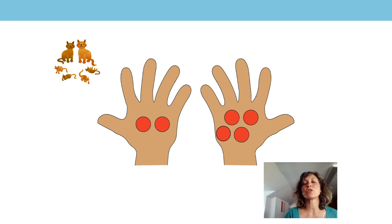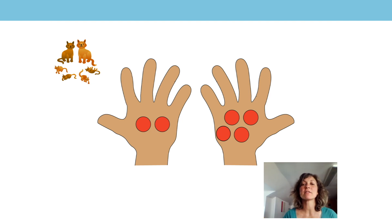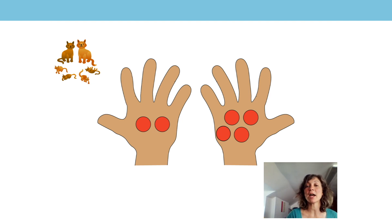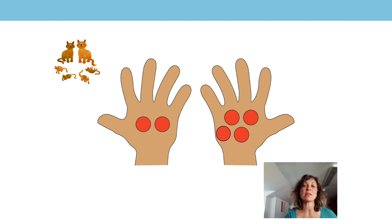If we think back to our picture of the cats, what does the two represent? That's right, the two represents the two adult cats. And what does the four represent? Yes, the four represents the four kittens. So I have two adult cats and four kittens. How many cats do I have all together? Six. Six, that's right.